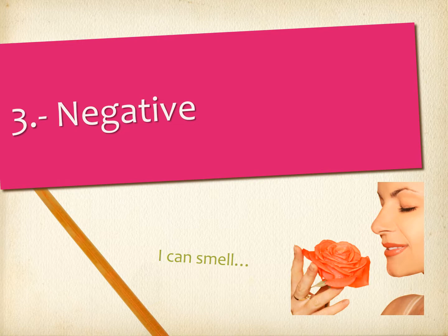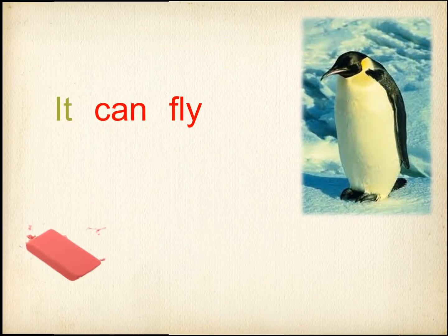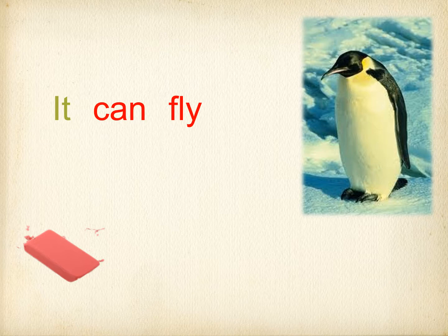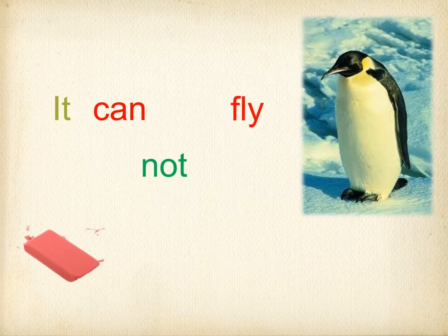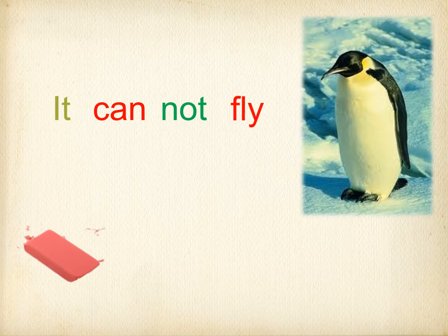Alright, let's see the negative. The penguin — what do you know about penguins? Can penguins fly? No. We need 'not.' The question is that in general we use the auxiliary: do not, does not. But with modal verbs we don't. So we move the verb, we put 'not' together with the modal, and we say it cannot fly. Or you make it shorter: it can't fly.